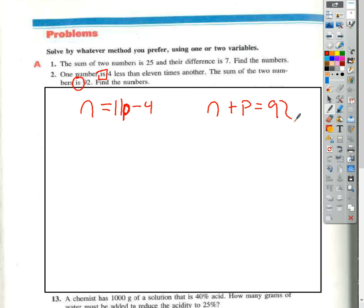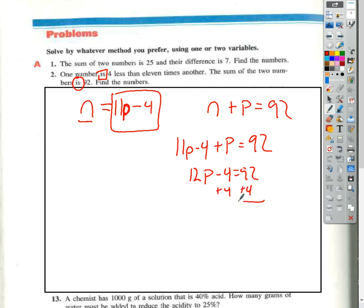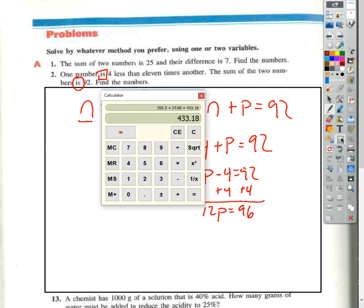I want to do as little work as possible. And I already know that N is equal to 11P minus 4. So instead of N, what can I write? I can write 11P minus 4 plus, here's my plus P, and that is all equal to 92. Well, if I have 11P, add one more, that makes 12P minus 4 is equal to 92. 92 plus 4, and I get 12P is equal to 96. That's pretty good because I know 96 is divisible by 12. 96 divided by 12, and that's 8. So P is equal to 8.